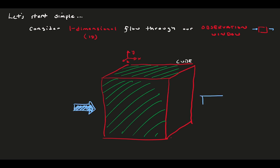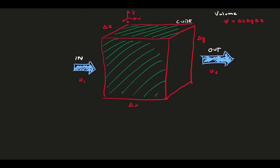As a result, we have flow entering our cube and exiting our cube in the x direction. Now, let's label the dimensions of the cube. This cube has sides with the length delta x, delta y, and delta z, and our velocity in is u1 and out is u2. The volume of our cube, by definition, is delta x times delta y times delta z.